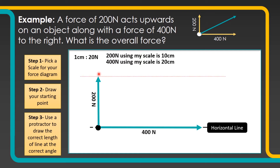Again this is going to be slightly easier if we use graph paper, but not impossible on plain paper. Then I'm going to do exactly the same thing, going from the end of this force vertically upwards. Where these two dotted lines meet is where the end of my resultant force will be, and it's going to go up from my starting point to the right — so I can draw that in using a ruler.